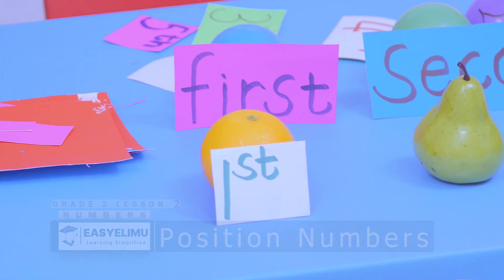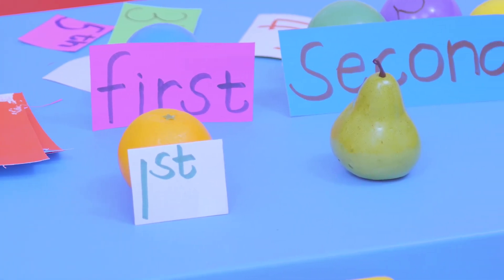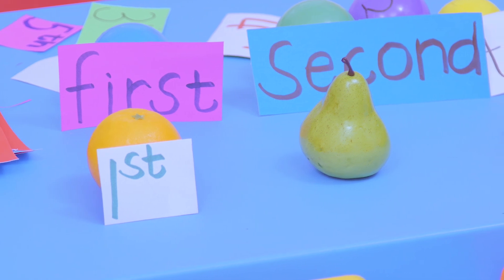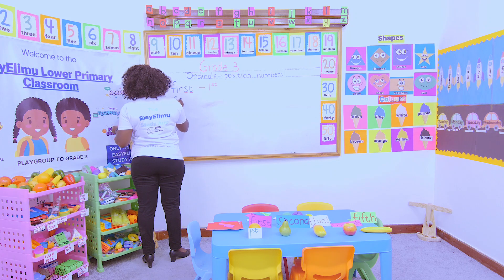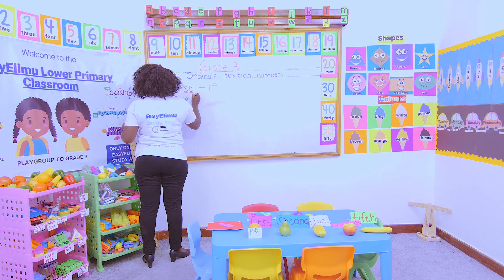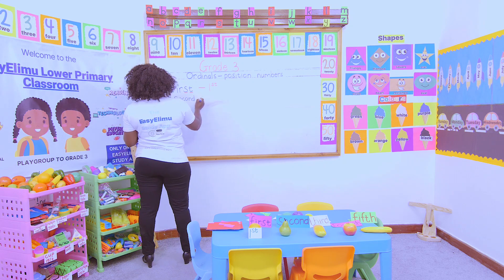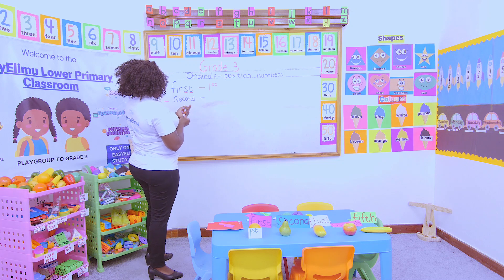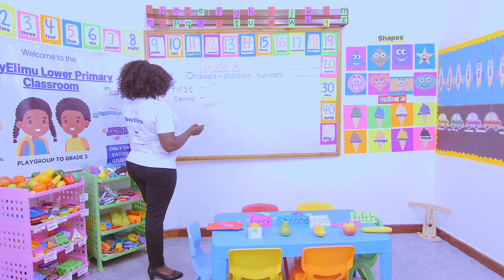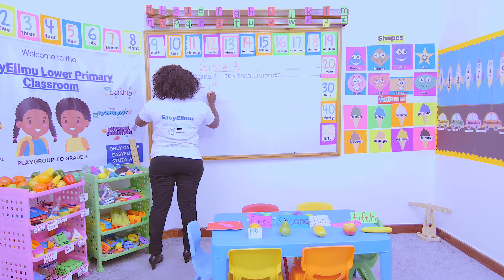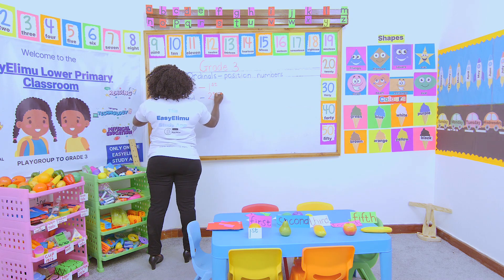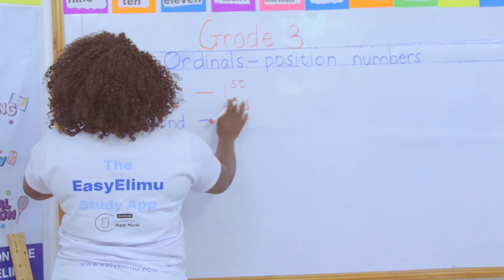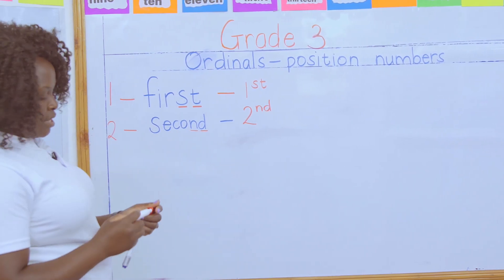We are on the pear. Pear was in which position? Pear was in position two. And the ordinal word is 'second.' Then after that, how do we form the symbol name? You take the number two, then take the last two letters 'nd,' to form the symbol 2nd.